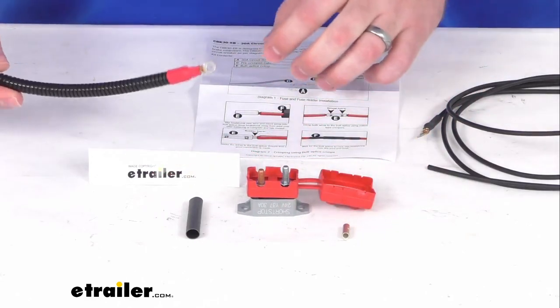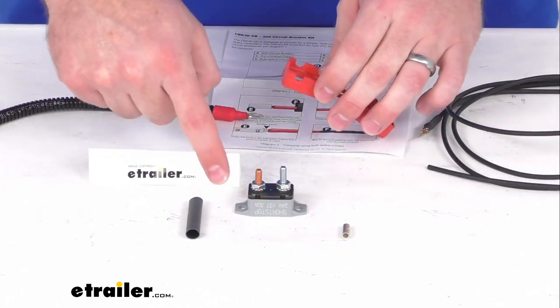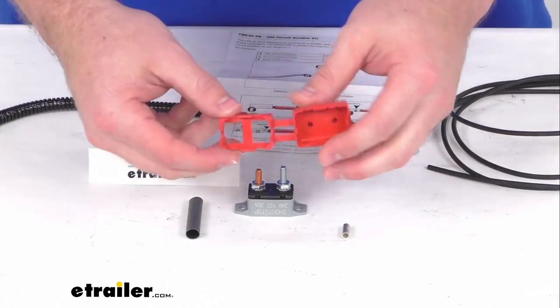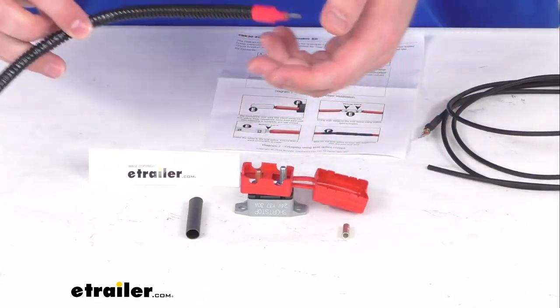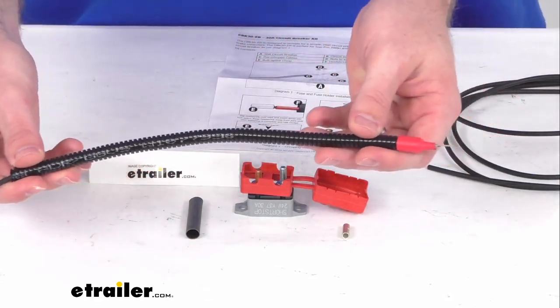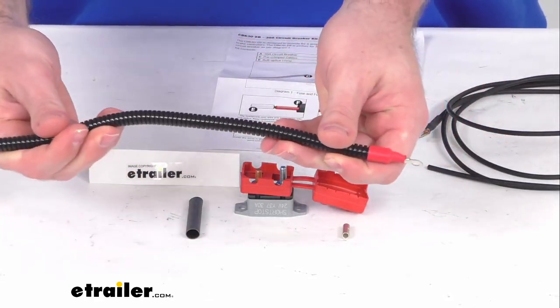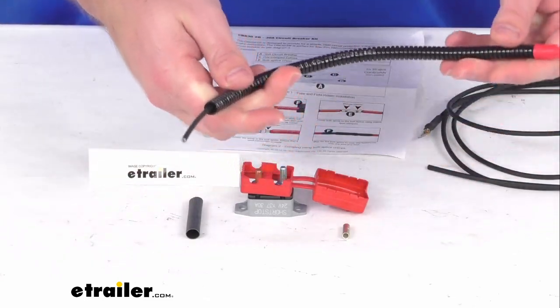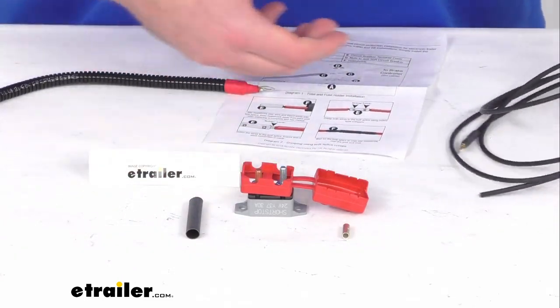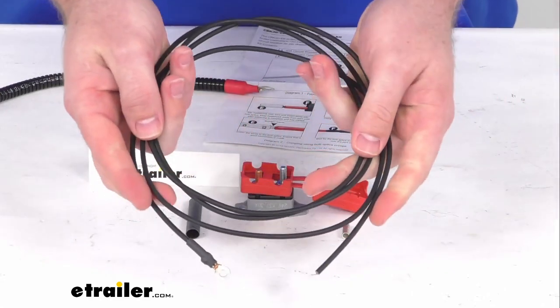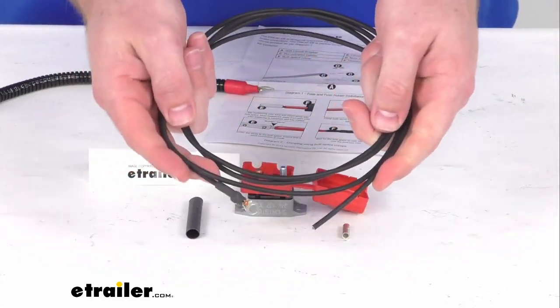This kit is going to come with the 30 Amp Circuit Breaker with the protective cover, your approximately one foot long pre-crimped cable that connects to your battery, and one approximately six and a half foot long cable that will connect to your brake controller.